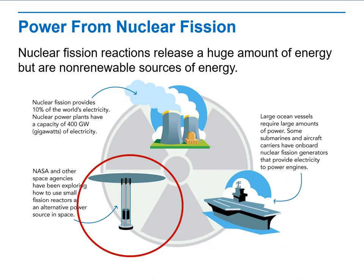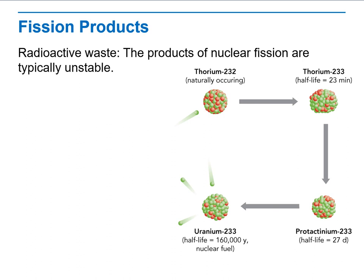As you can see here, we will talk about fission products and radioactive waste. The products of nuclear fission are typically unstable. Radiation from radioactive waste continues while the products of nuclear fission undergo multiple alpha, beta, and gamma decays until they become stable nuclei.